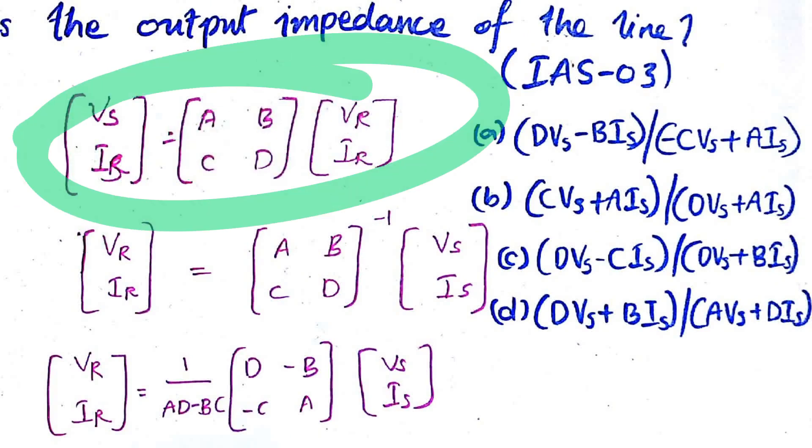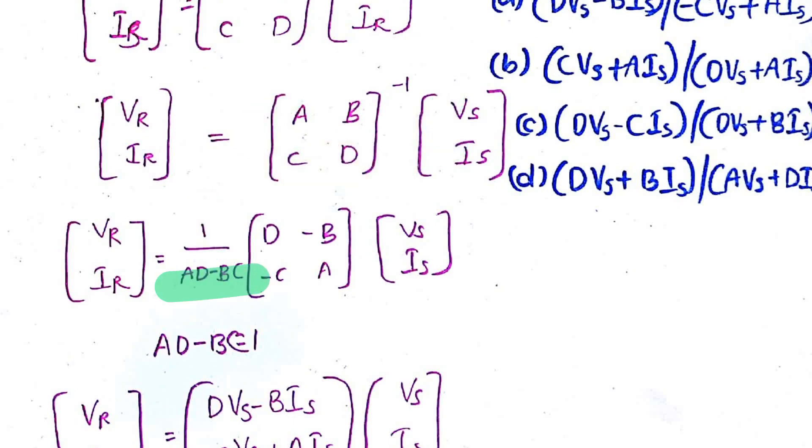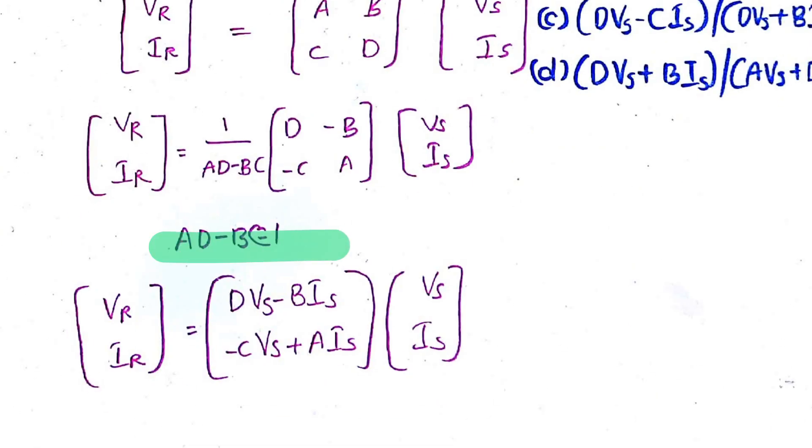We know that [Vs, Is] equals ABCD matrix times [Vr, Ir]. This matrix notation we already know. Vs and Is represent the input impedance part. I want Vr by Ir, so I will put this on one side and transfer the ABCD on the other side. It becomes ABCD matrix inverse into [Vs, Is]. The inverse of 2 by 2 matrix is 1 by (AD minus BC) times [D, -B; -C, A]. And AD minus BC equals 1 for a transmission line - we already know this relationship.